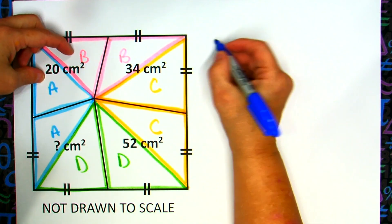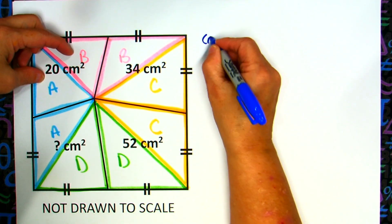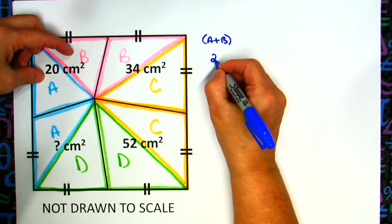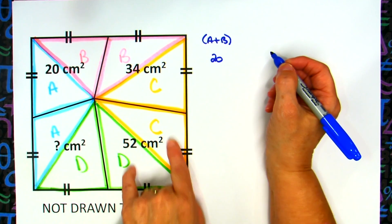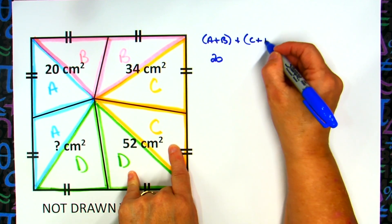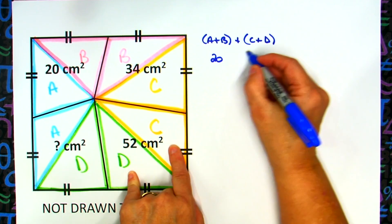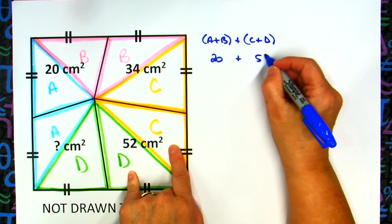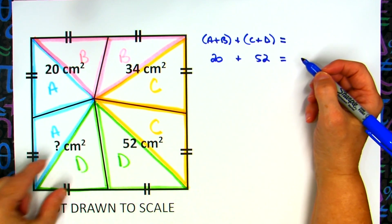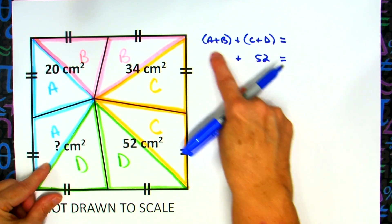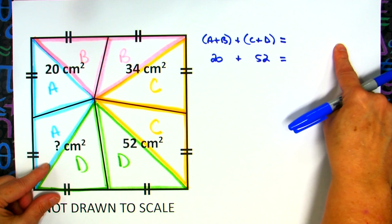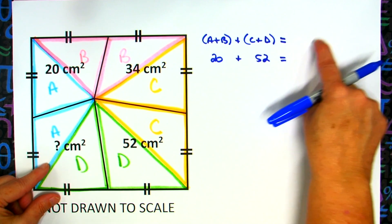So I'm going to take A plus B, and I know that is 20. I'm going to add that to C plus D, but I know C plus D is 52. Now I need an equation, so here comes the equal sign. Now I'm going to do the same thing over here. Now, they won't be in the same order. I'm not going to do A plus B, and then C plus D, but I will have A plus B plus C plus D, but this time I'm going to pair them up into what I know what they are.